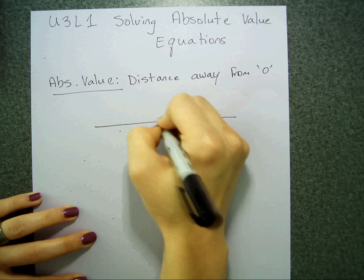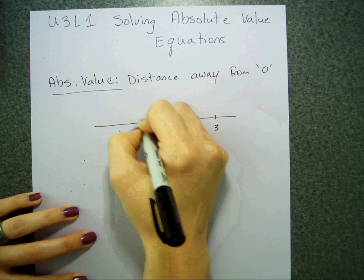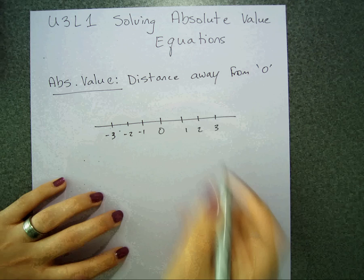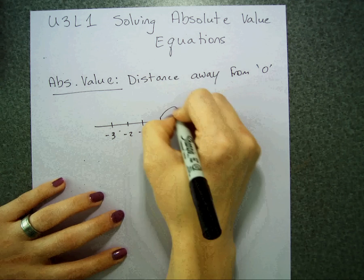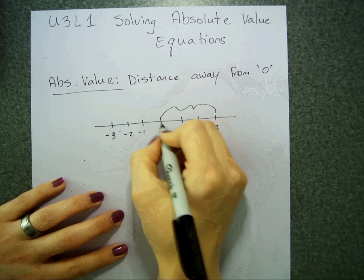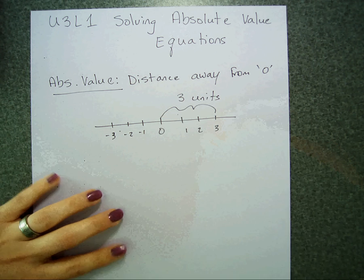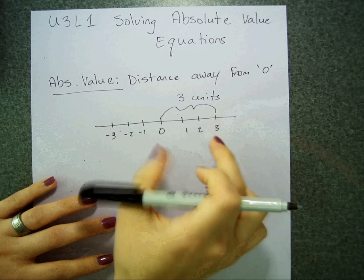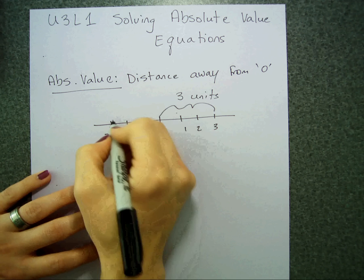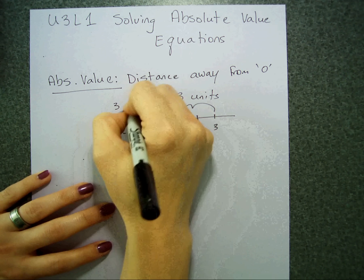So if I look at a number line, here's zero in the middle. From zero to three, how far is that? What is that distance? It should just be one, two, three — three units. Three is three units away from zero. And same thing, if I look at negative three, how far away is it from zero? Negative three is, as well, three units away.